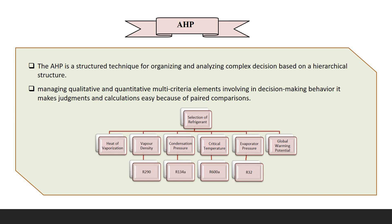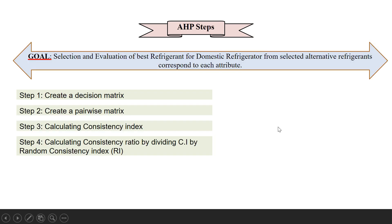This method is most preferable to choose the best refrigerant used in our major project for the domestic refrigerator, using various parameters like critical temperature, evaporator pressure, global warming potential, condensation pressure, and heat of vaporization. For these parameters we have used four refrigerants: R290, R134, R600A, and R32.